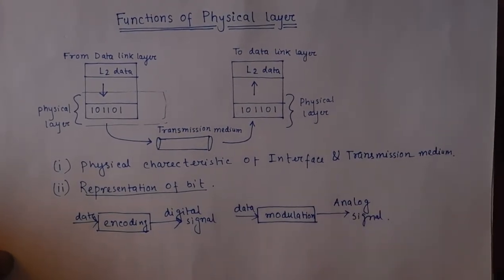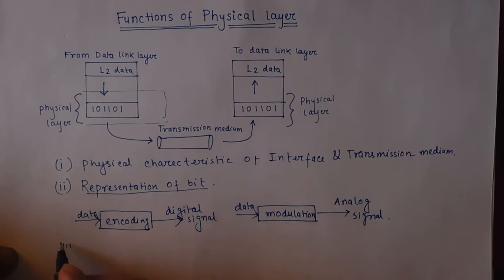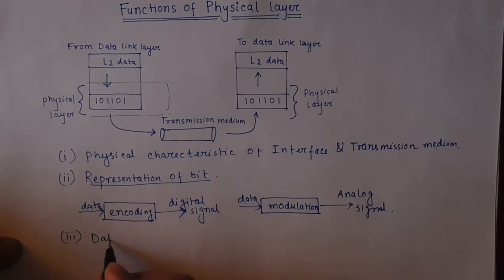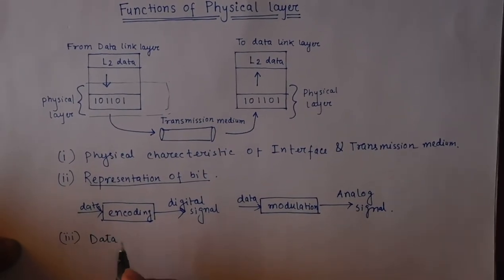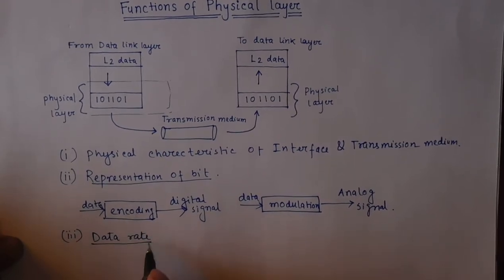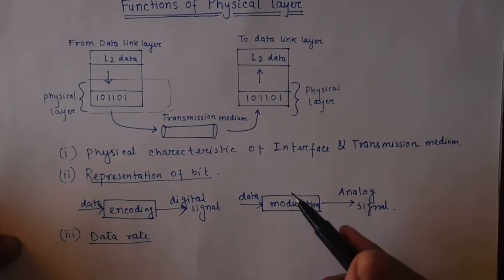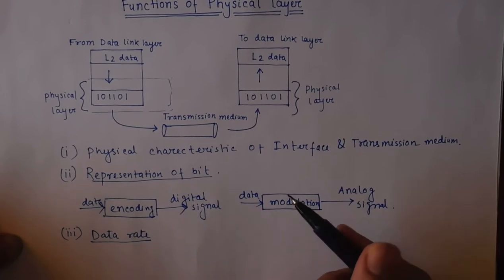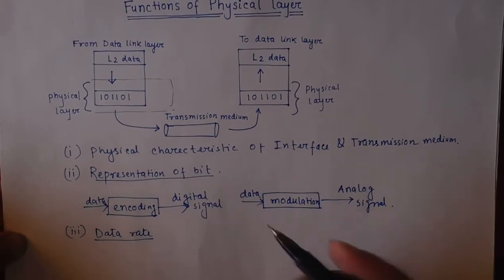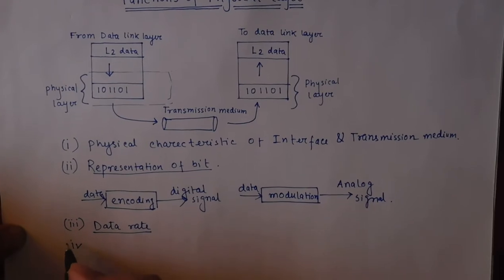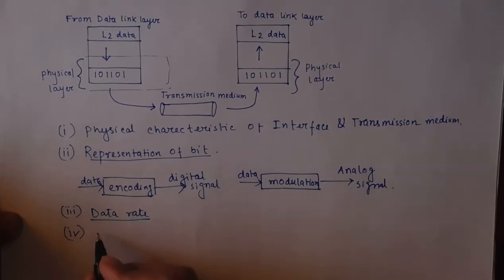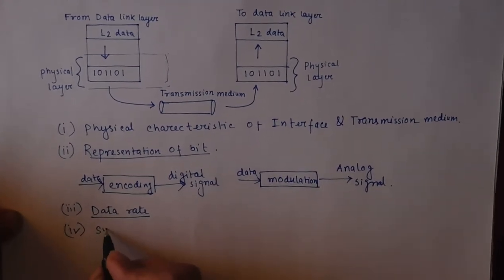The next function is data rate. Data rate is also calculated in the physical layer. Data rate means the number of bits sent per second. The fourth function is synchronization of bits.